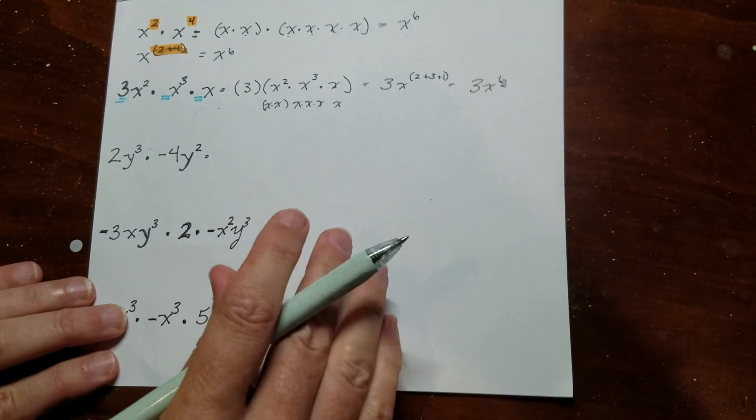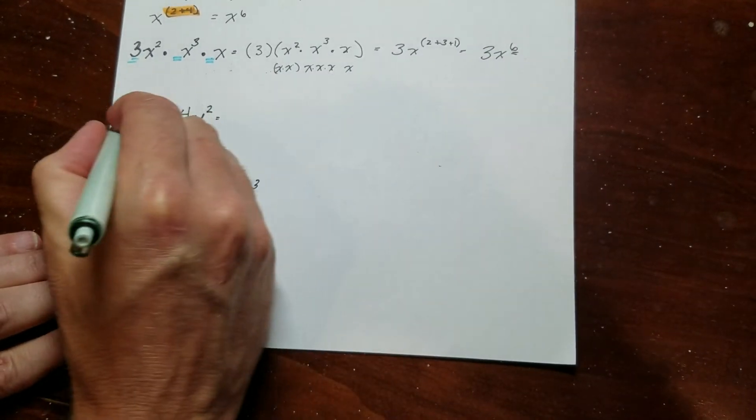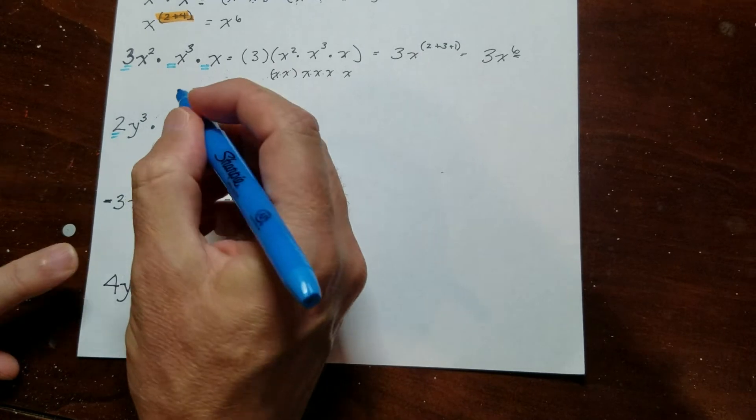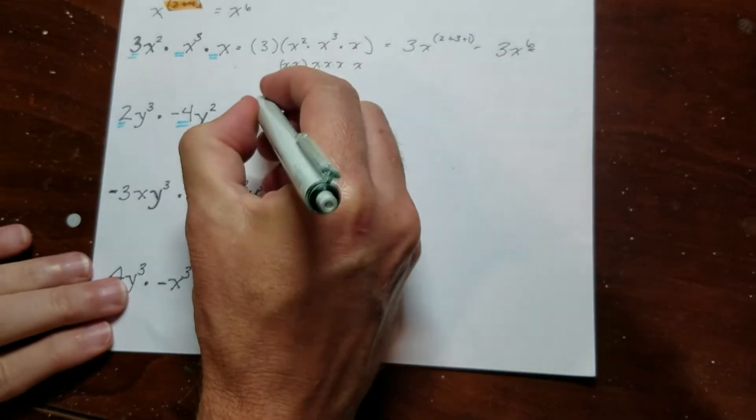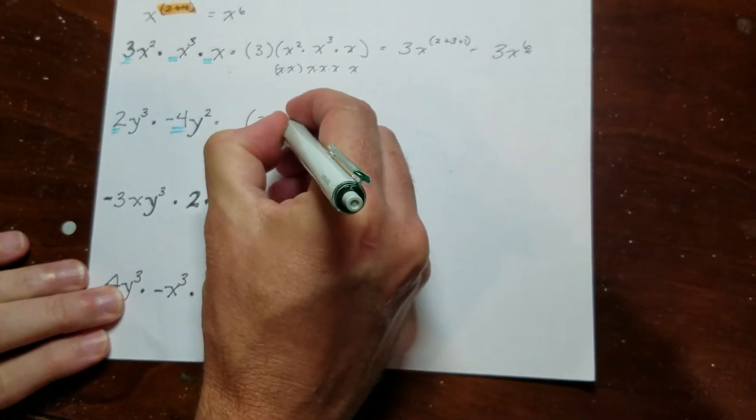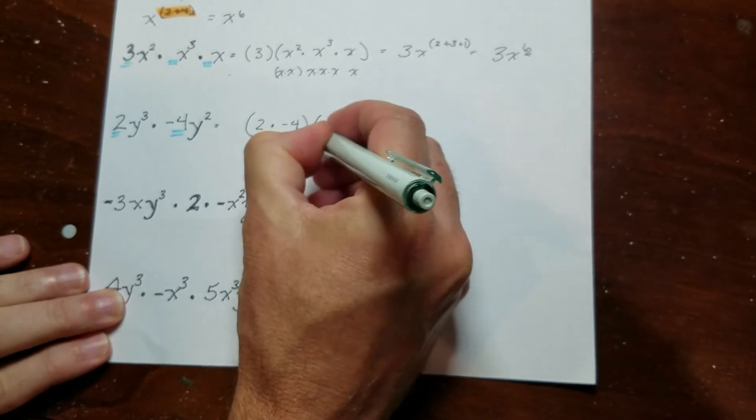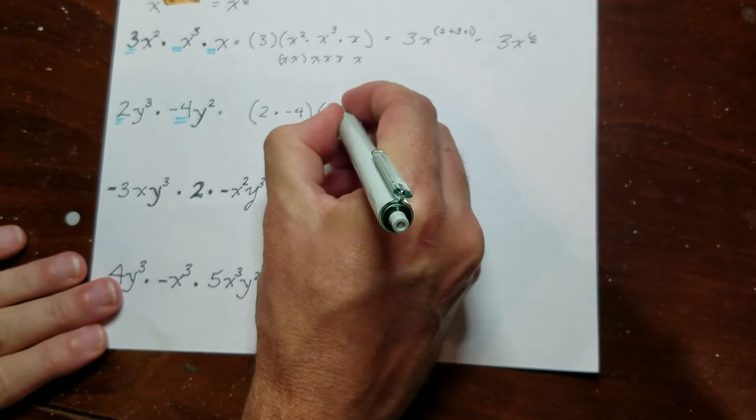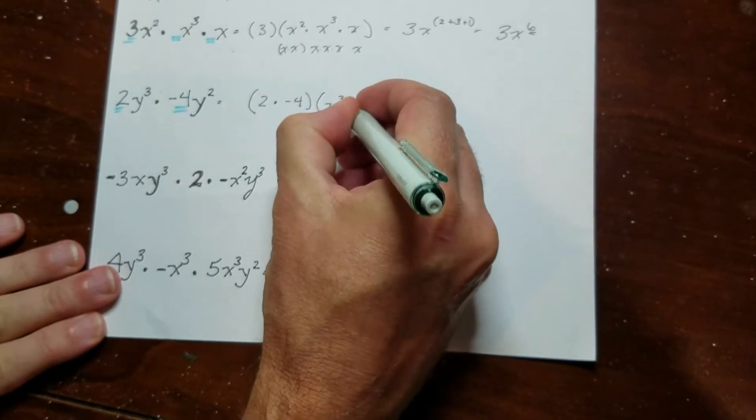Okay, this guy down here, so what I'm going to do is take my numbers. So I have my coefficients. I'm going to put them in a group. So I've got 2 times negative 4. And then I've got these two y's. So I have a y to the 3rd and a y to the 2.